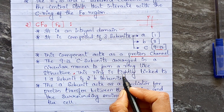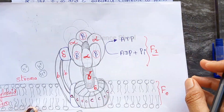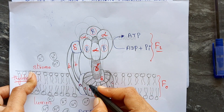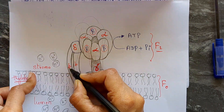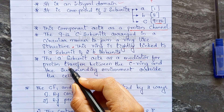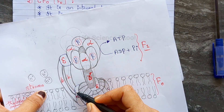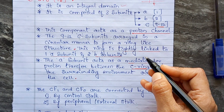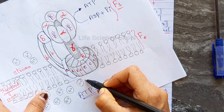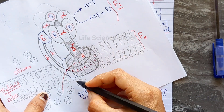The 9 to 12 c subunits are arranged in a circular manner to form a ring-like structure. This c-ring is tightly linked to one a subunit and two b subunits. The a subunit acts as a mediator for proton transfer between the c-ring and the surrounding environment outside the cell.